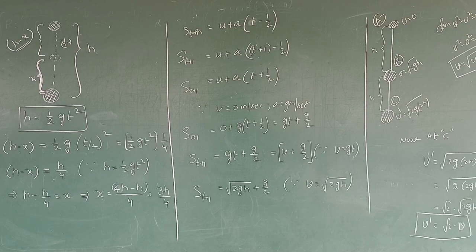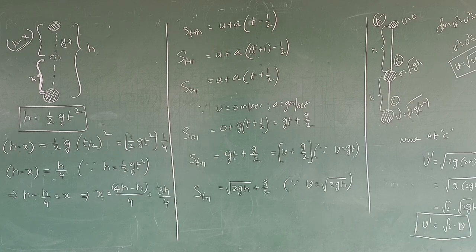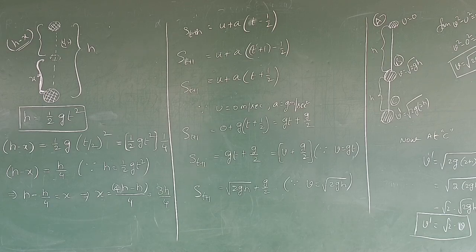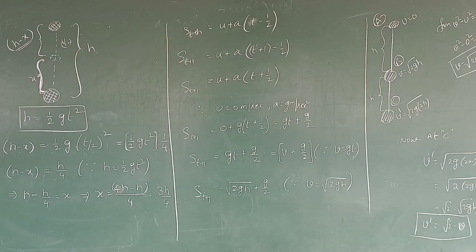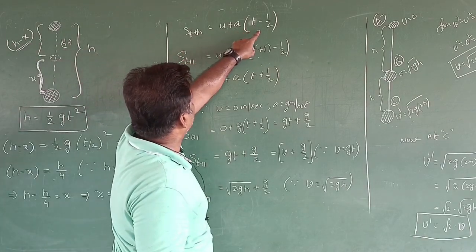Next problem: a body is dropped from a certain height above the ground and falls through a distance h in the first t seconds. In the next one second, how much distance does it cover?